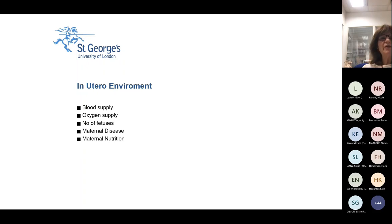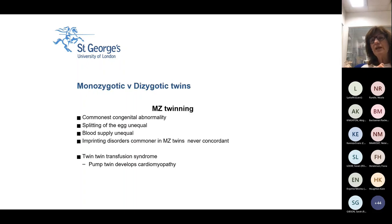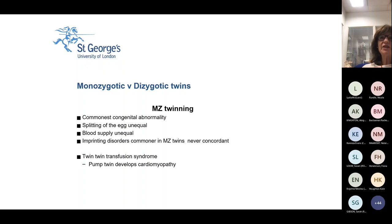We start with an in utero environment, which is very different from postnatally. You might have more than one fetus sharing circulation, maternal disease, maternal nutrition, and the oxygen supply in utero is very different from post utero. Monozygotic twinning — the commonest genetic abnormality there is — the egg often splits unequally, and you can get imprinting disorders which occur in one twin and not the other, so they're very frequently not identical. There's a condition called twin-twin transfusion syndrome, and the pump twin — the one giving more blood to the other — may well develop a cardiomyopathy.